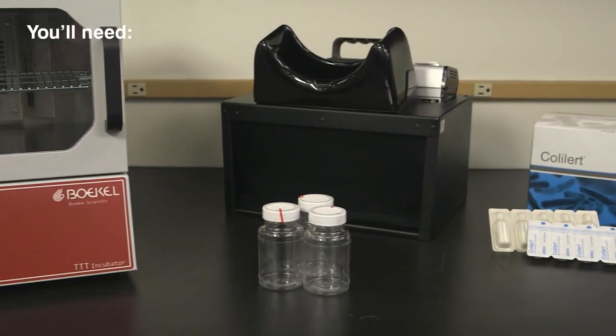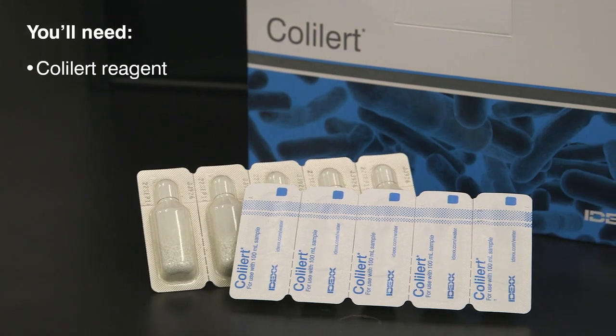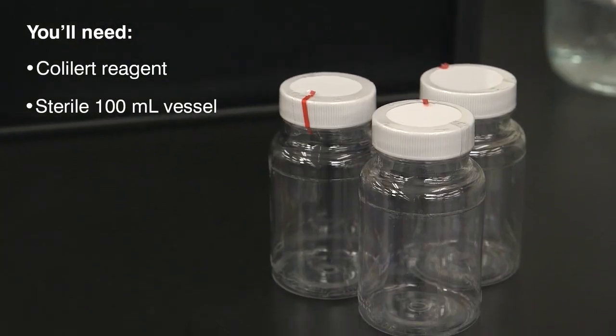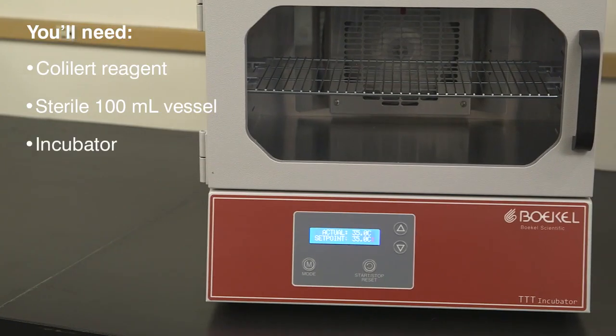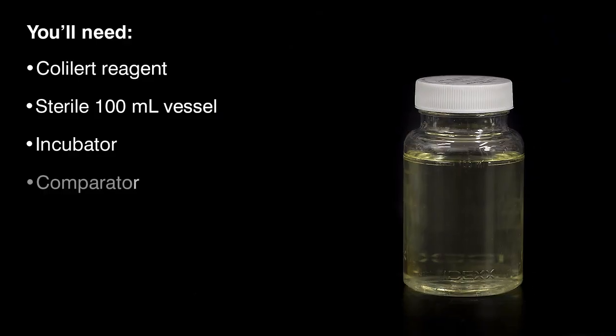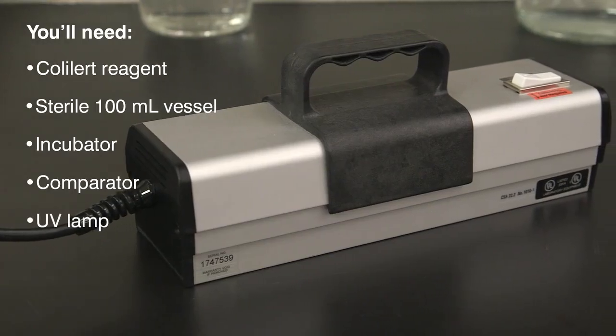You will need the Coalert reagent, a sterile, transparent, non-fluorescing 100 ml vessel, a temperature-controlled incubator, the Coliform E. coli comparator, and a 6-watt, 365-nanometer UV lamp.